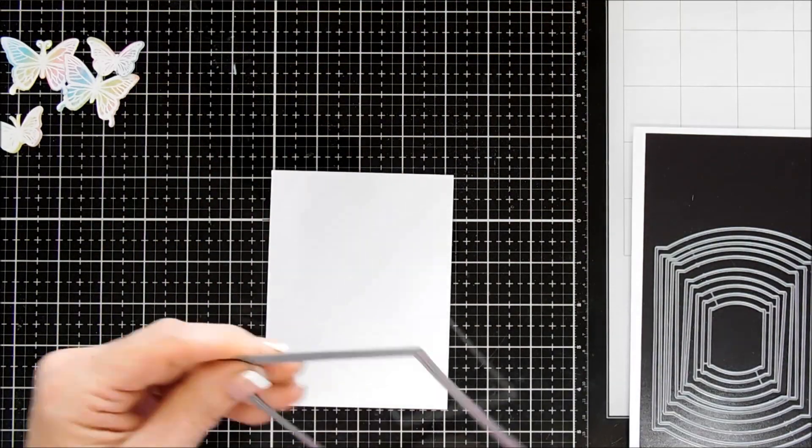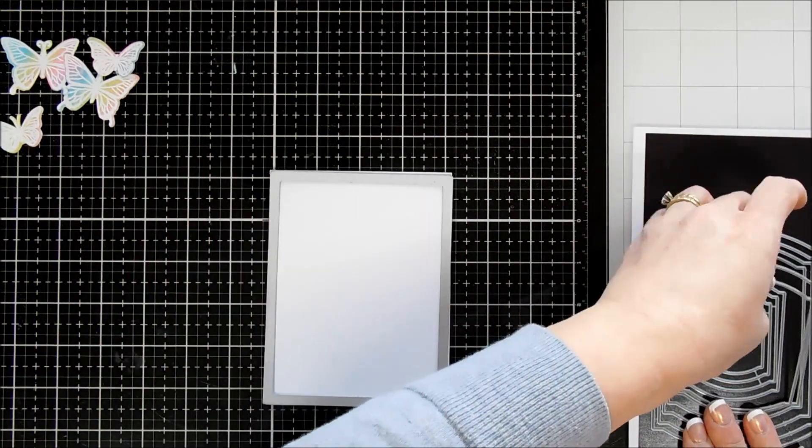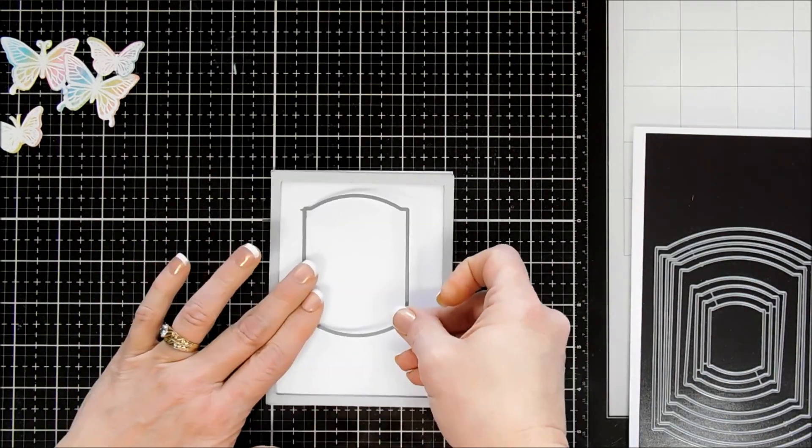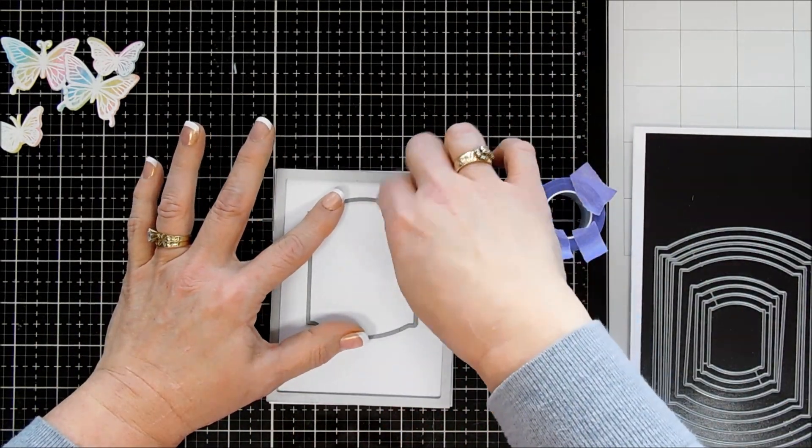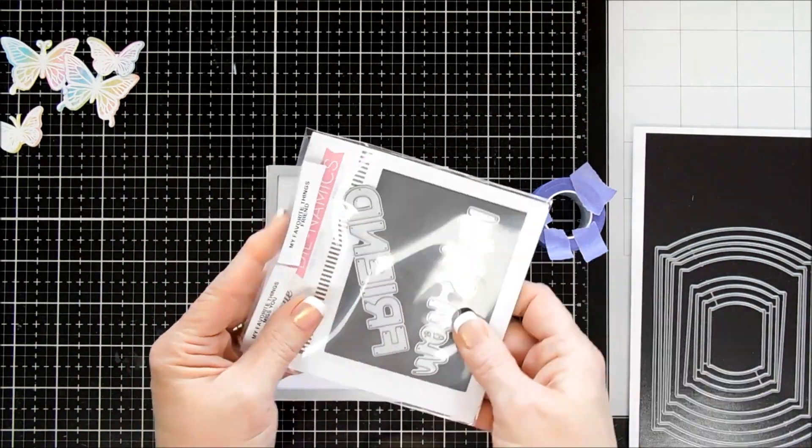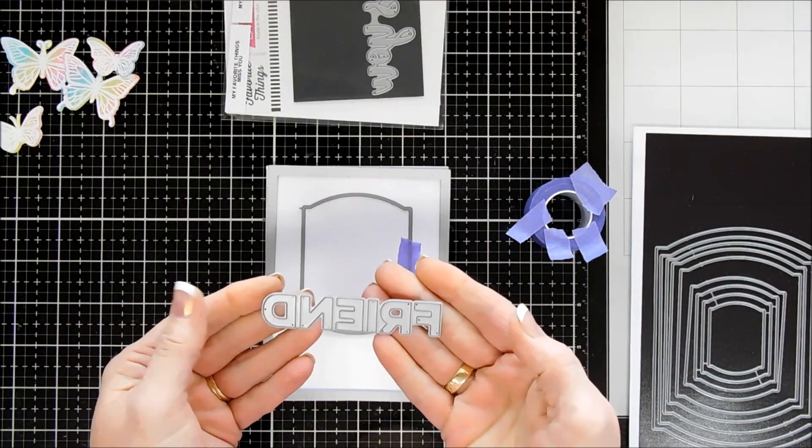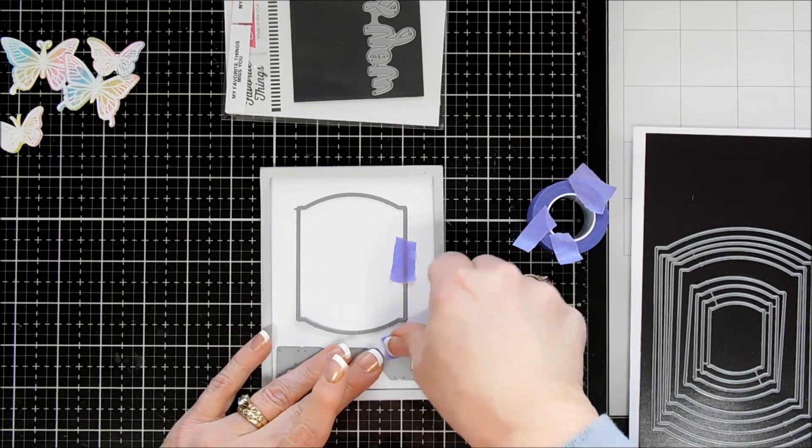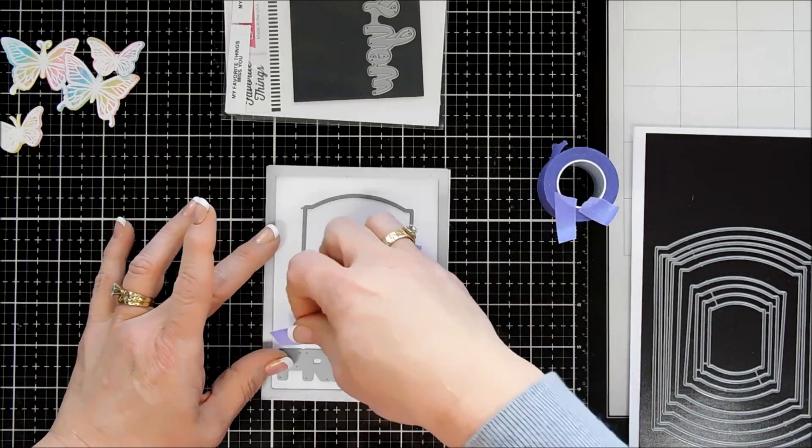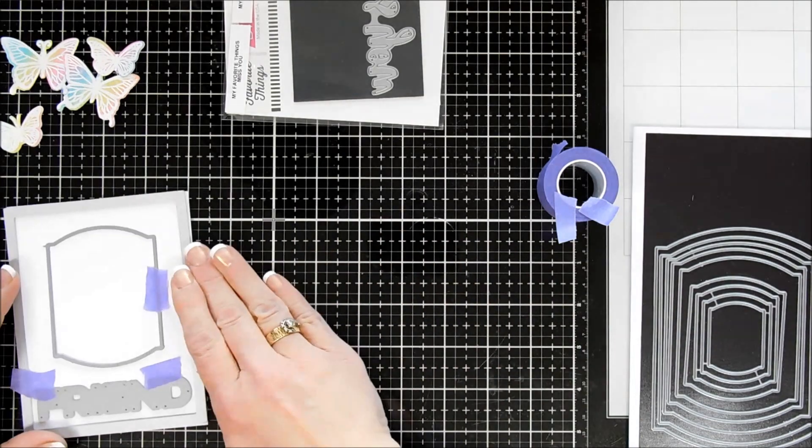I'm going to take a couple sets of rectangle dies or stacking dies here. I have a stitch rectangle die that will cut out a panel that's four inches by five and a quarter. And then these little fancy dies are so pretty. They're called the elegant rectangles. I'm going to create a window with one of them. And then I'm also going to bring in a friend die and die cut out the word friend on the very bottom of this panel.